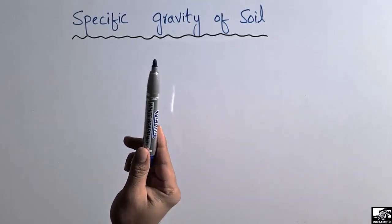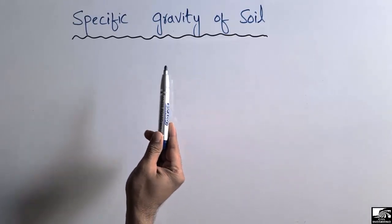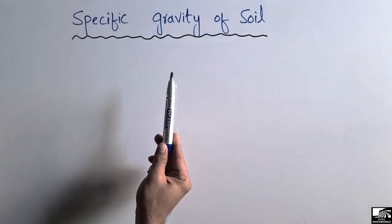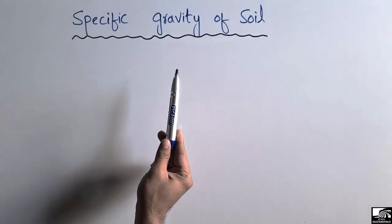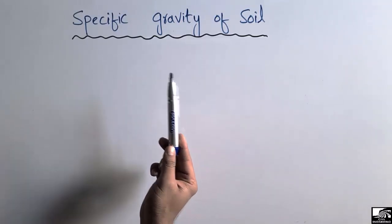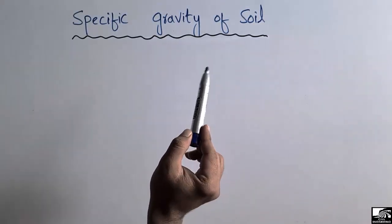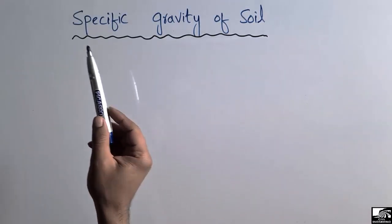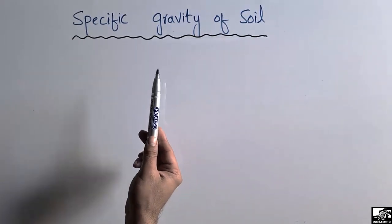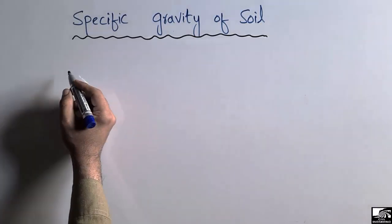Specific gravity is one of the important fundamental properties of the soil. It is used to calculate the void ratio, the density of the soil, the porosity of the soil, the saturation of the soil, and other soil parameters. Now, what is specific gravity of the soil, and what are the different values for various types of soil?